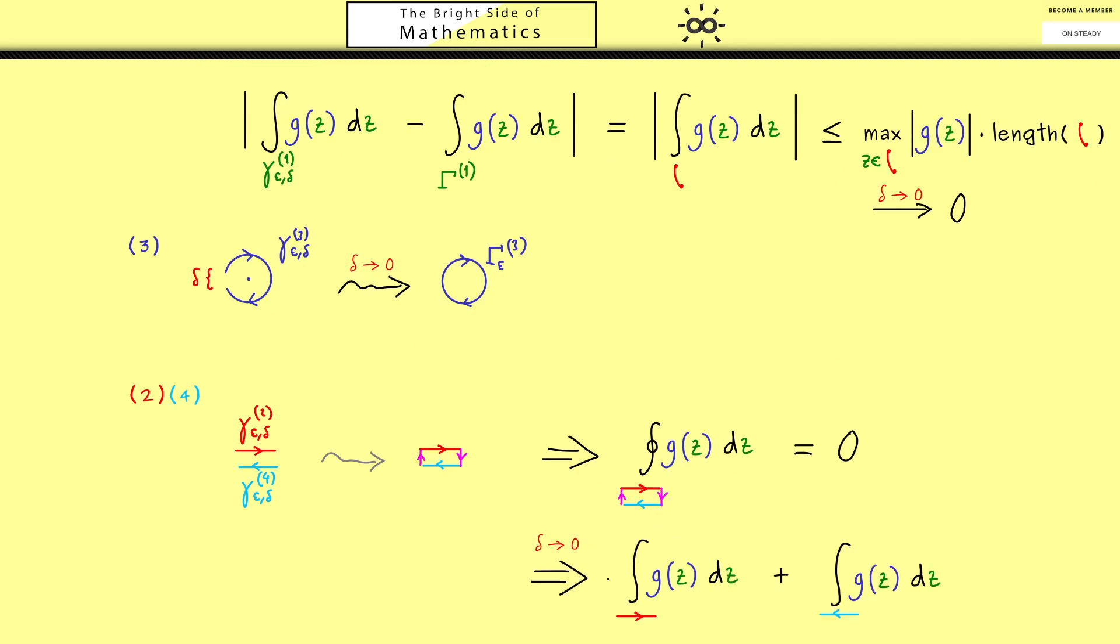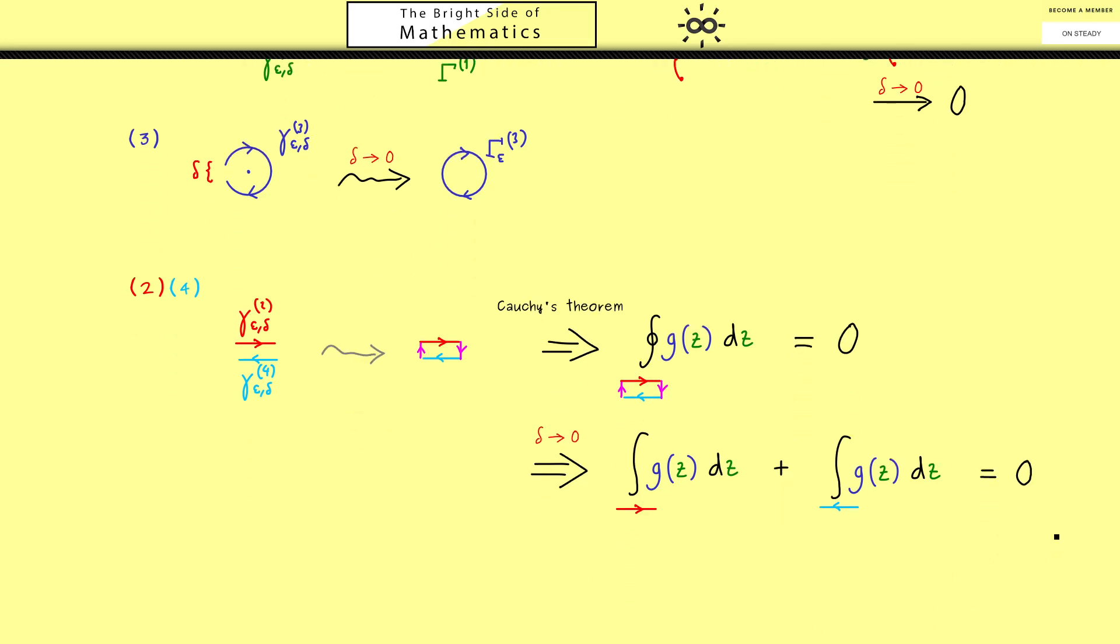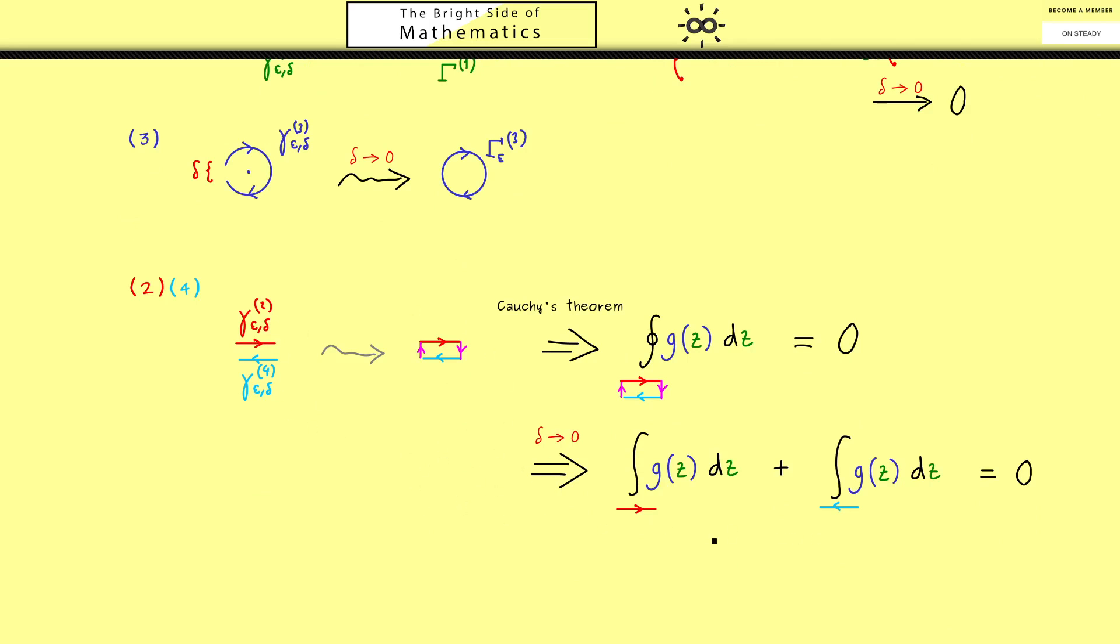Therefore, we can conclude that for delta to 0, only the two integrals along the two lines remain. Moreover, the result is then the sum of both integrals vanishes. Therefore, we can conclude in the limit delta to 0, the corridor is not important at all.